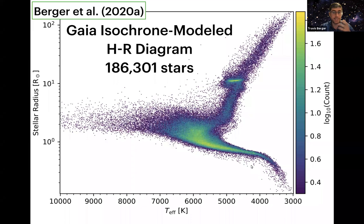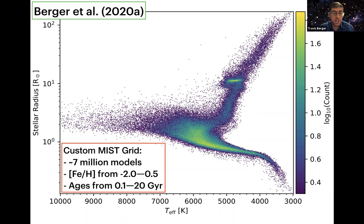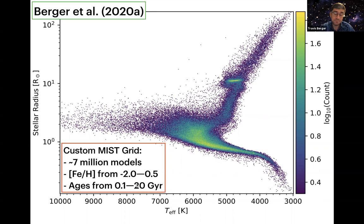We created this plot using a combination of SDSS-G and 2MASS K photometry with reddening corrections, Gaia DR2 parallaxes, and spectroscopic metallicities wherever available — comprising roughly a third of the Kepler star sample. The model grid we use for isochrone placement is a custom MIST interpolated grid using initial metallicities ranging from -2 to +0.5 dex in 0.05 dex steps, and ages from 0.1 to about 20 billion years with logarithmic and then linear spacing — giving roughly 7 million models in the entire grid.